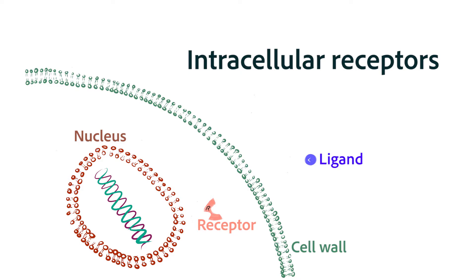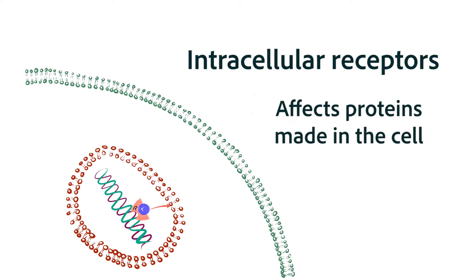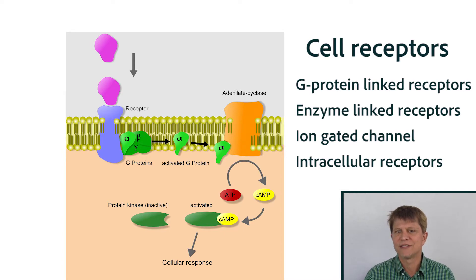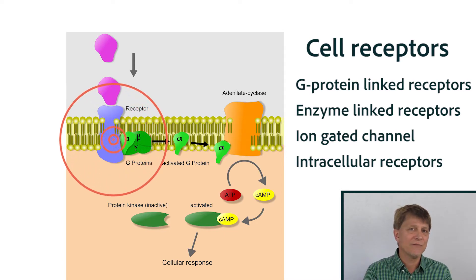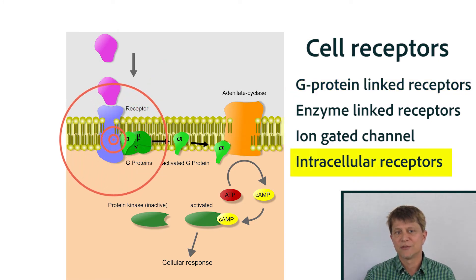And finally, there are the intracellular receptors. The ligands for those have to be lipid-soluble in order to get through the phospholipid bilayer, and when those ligands bind to their receptor, the entire receptor-ligand complex goes into the nucleus of the cell, binds to the DNA, and those ligands are going to affect the production of proteins that the cell makes. Cellular receptors are proteins that are on the surface of the cell, or also inside the cell — intracellular receptors are possible as well.